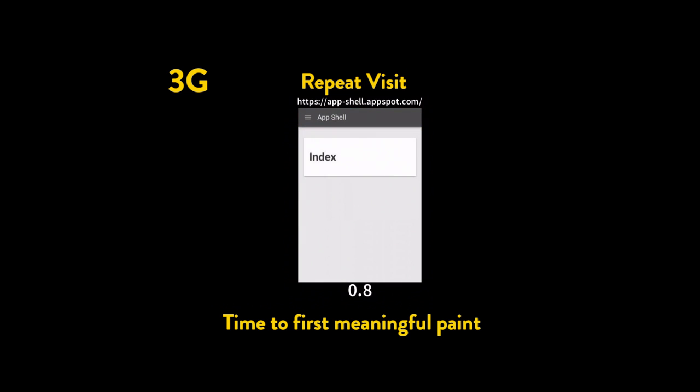And for other browsers that don't support service worker, you'd be damaging yourself. So you still want to be serving up a static render of your site so it loads as fast as humanly possible, and then progressively enhance with service worker to use the app shell model. If you are using the app shell model, as you can see here, we've actually slashed our load times for first meaningful paint on repeat visits.